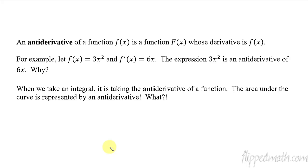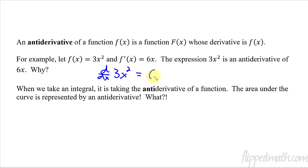We're going to talk about anti-derivatives. An anti-derivative of a function is a function capital F whose derivative is f. Here's a quick little example: if you've got 3x² as a function, its derivative would be 6x from the power rule. That means 3x² is considered an anti-derivative of 6x, because if I take the derivative of 3x², I get 6x. An anti-derivative is basically going the other direction.